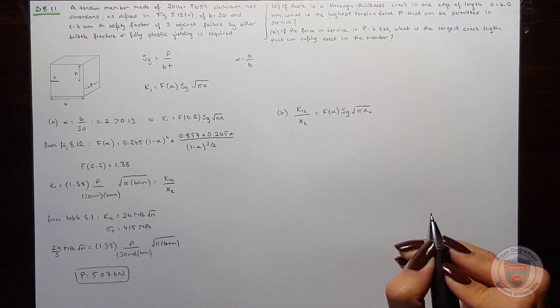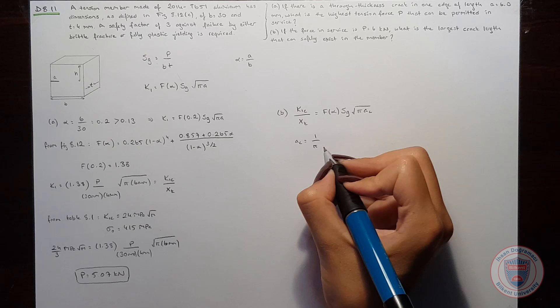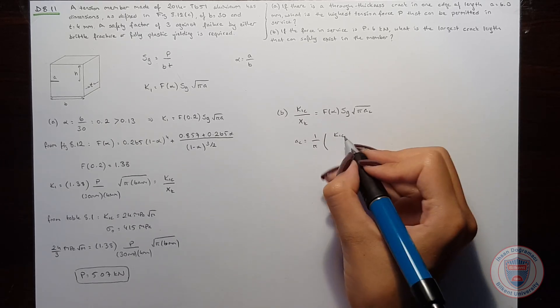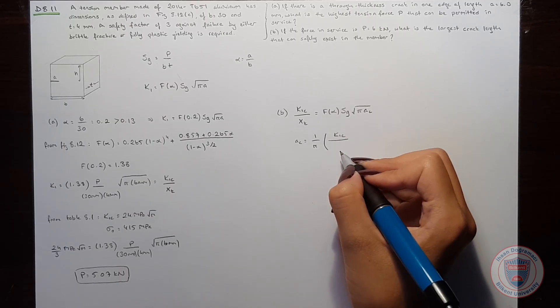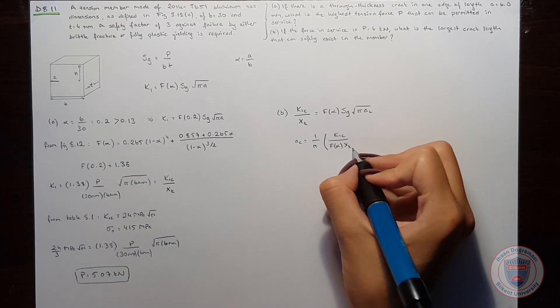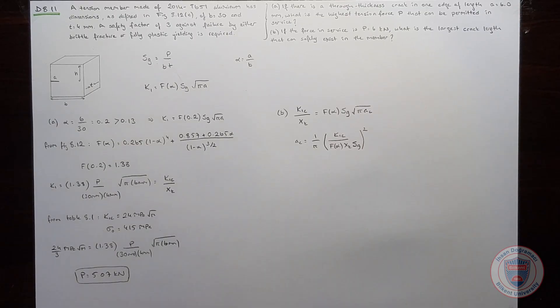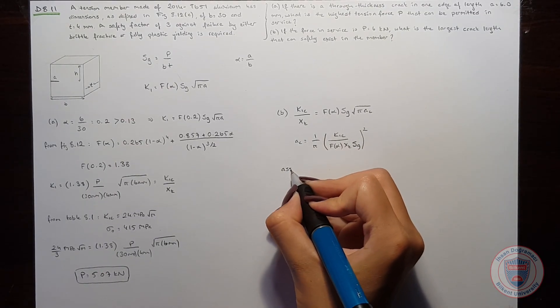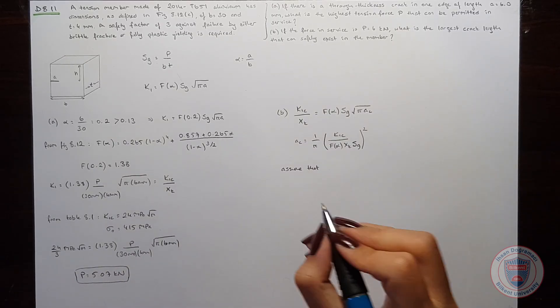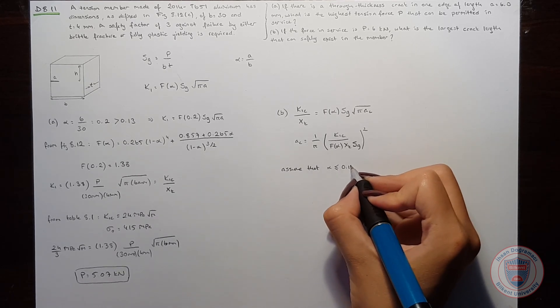And when we make some arrangements, we will obtain a_c equals (K_IC over form factor times safety factor times S_g) squared divided by pi. Let's first assume that we will have an a_c such that the alpha will be smaller than 0.13.